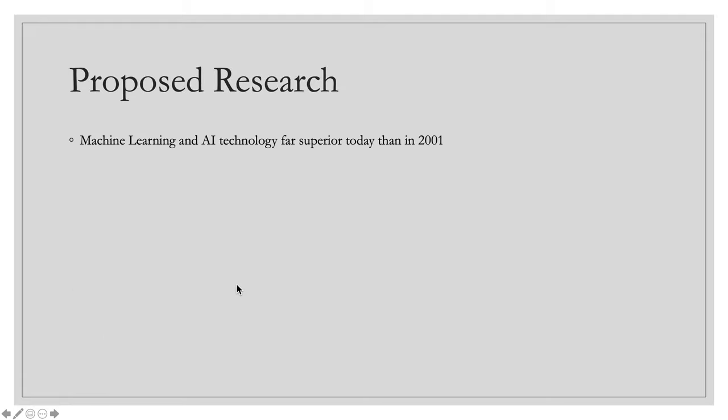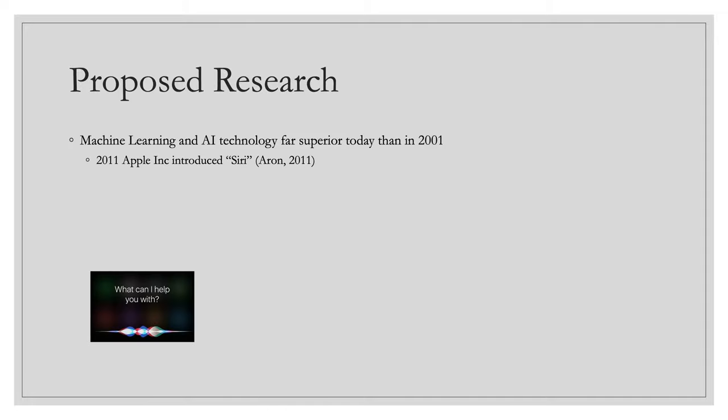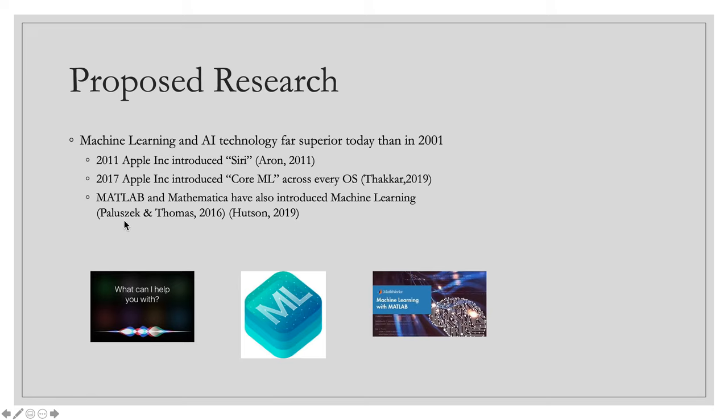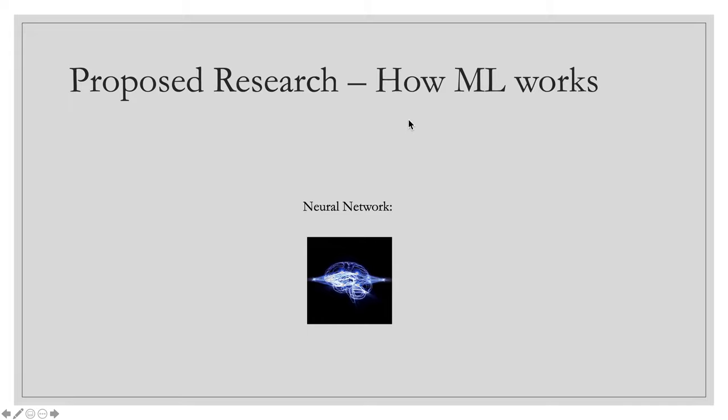So my proposed research. I want to point out that machine learning and artificial intelligence technology is far superior today than it was in 2001. As we all know, in 2011, Apple introduced Siri, brought AI to the masses. And in 2017, they took it a step further and introduced something called core ML across every operating system. And what that is, is a framework that allows developers to very easily access the math and functionality that you need to do machine learning. Google and Microsoft did the same thing. So basically, anybody who has a computer can access this functionality. It's also important to point out that MATLAB and Mathematica have this functionality too. In particular, MATLAB has incredible machine learning functionality. If anybody has the time, there are some on-ramp tutorials that are free with the university. It takes maybe two hours of your time and they're just incredible in terms of teaching you what MATLAB can do with that.